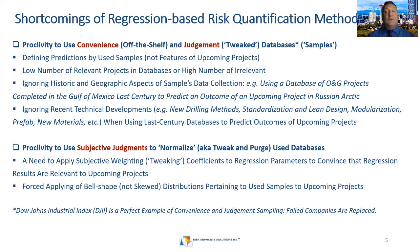One example of convenience and judgment sampling is the Dow Jones Industrial Index — a perfect example, because there is a kind of 100-year growth everyone is impressed by. But what is often forgotten is that failed companies are replaced every now and then, and recently several companies were replaced just this year.